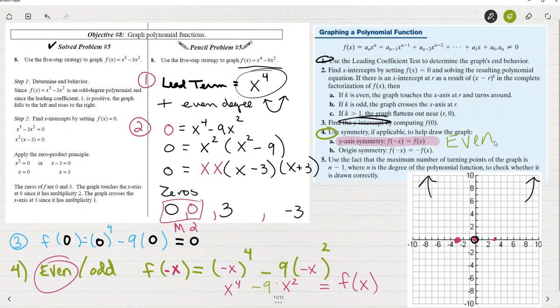Now number five. Let's use the fact that the maximum number of turning points is n minus one, where n is the degree of the polynomial function. So since this is degree four, I know that we turn around at the very most three times.